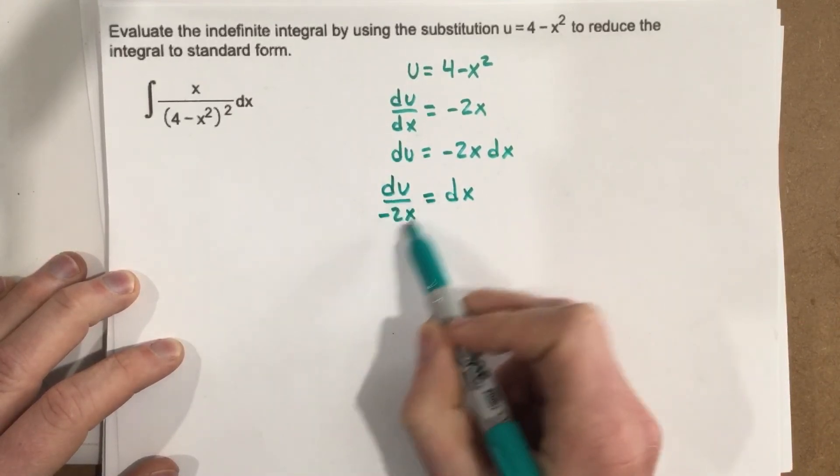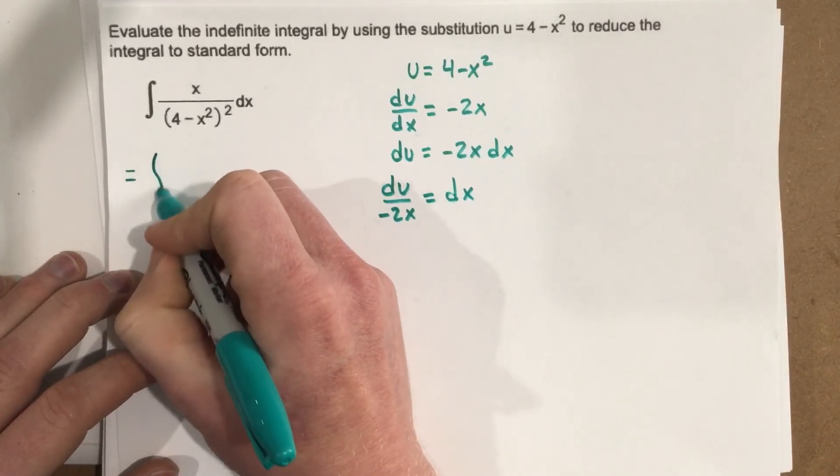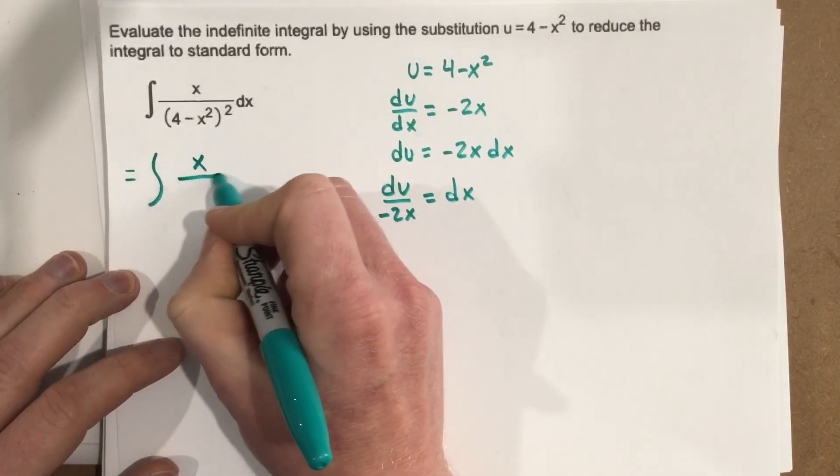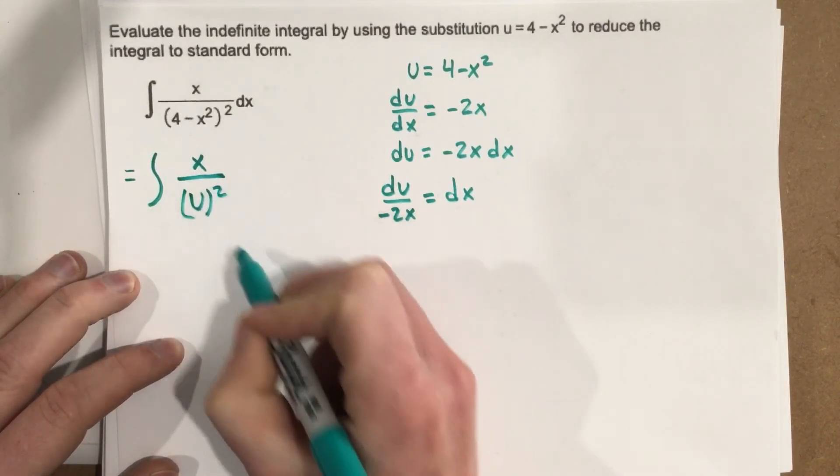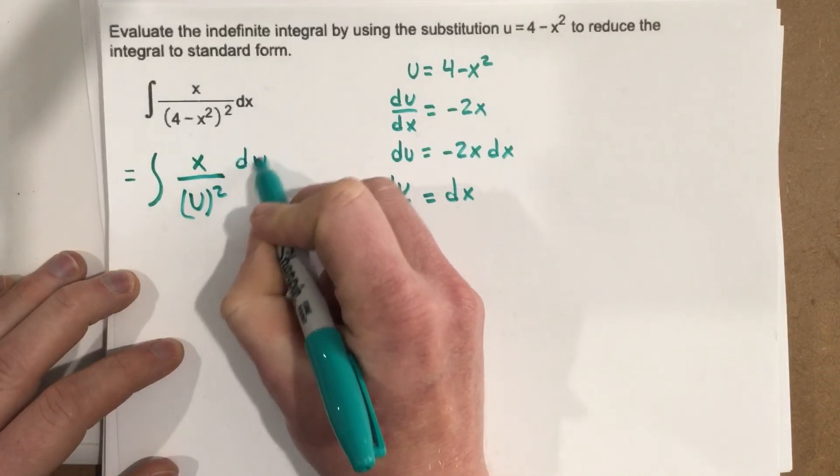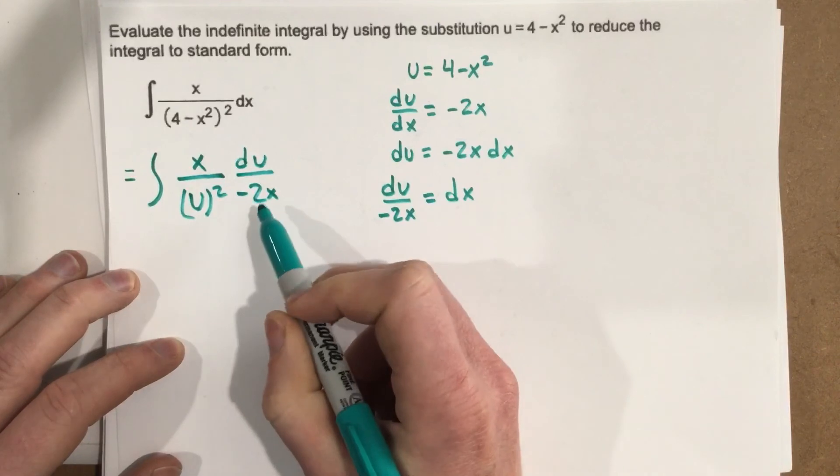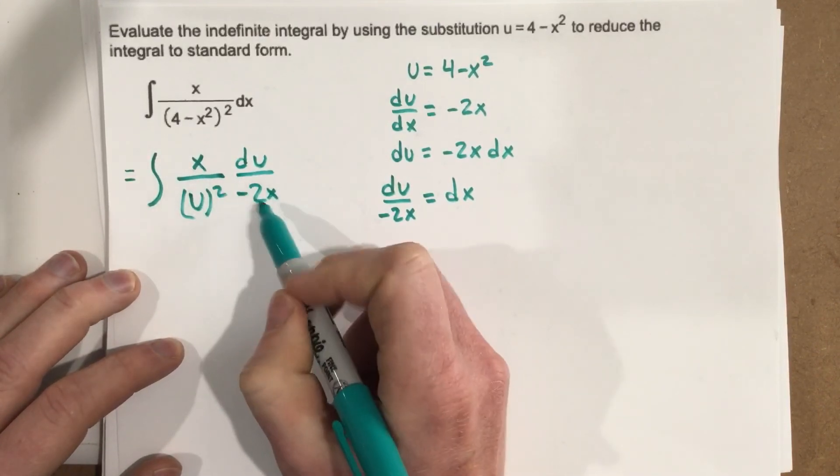Now at this point we're going to start to substitute some stuff in. So this equals the integral of x over, this would be u squared, we substitute this in, this is du over negative 2x. And you can see why we did the u-substitution because you have x on top, you have x on the bottom, we're going to cancel those out.